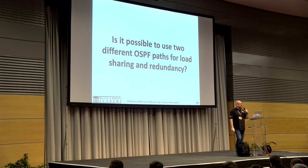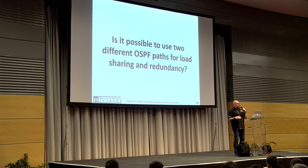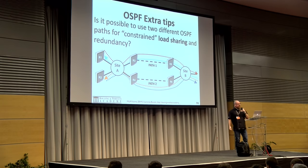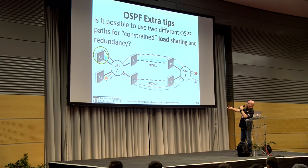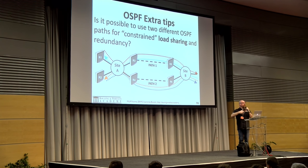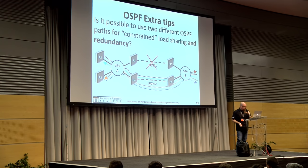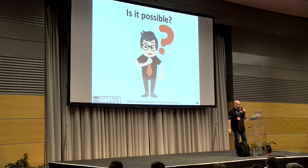So the question is: is it possible to use two different OSPF paths for both load sharing and redundancy, without using MPLS and traffic engineering — just OSPF? The goal: router 1 uses only path 1 for both upload and download (same path, same latency), router 2 uses path 2, and in case of failure all traffic switches to the other path. Is this possible with just OSPF?